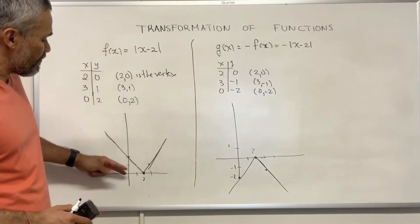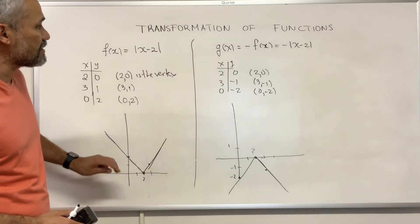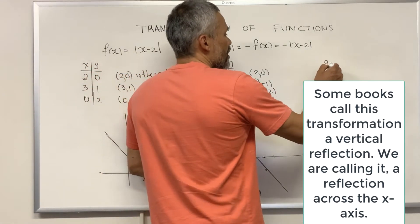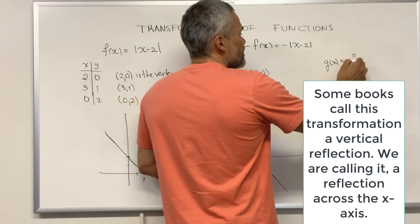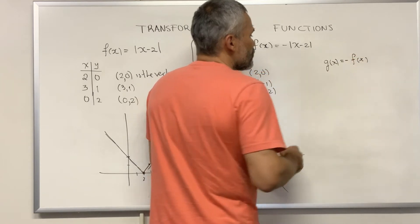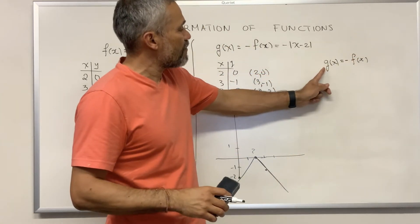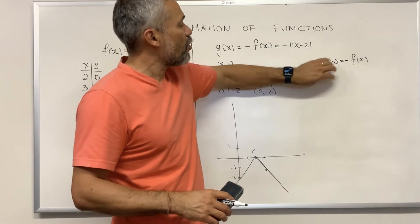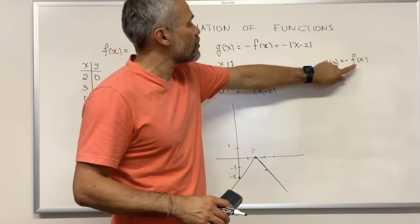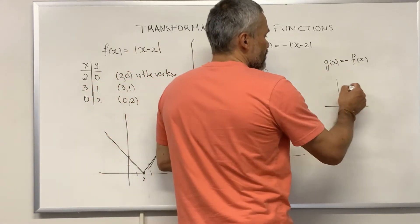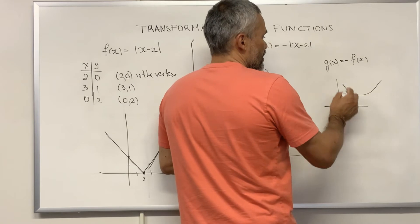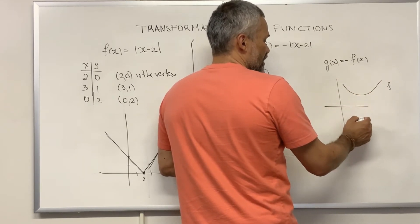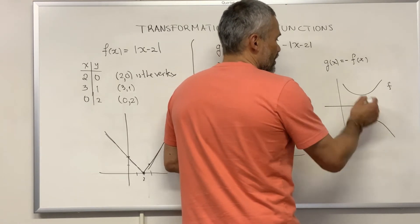The relation between these two graphs is that the new graph is the one you get when you flip the original graph across the x-axis. This is a reflection across the x-axis. In general, if you have a function f of x and you consider the new function negative f of x, then the graph of g is just the reflection of f across the x-axis. If this is your f, then your g is going to be its reflection and will look like this.